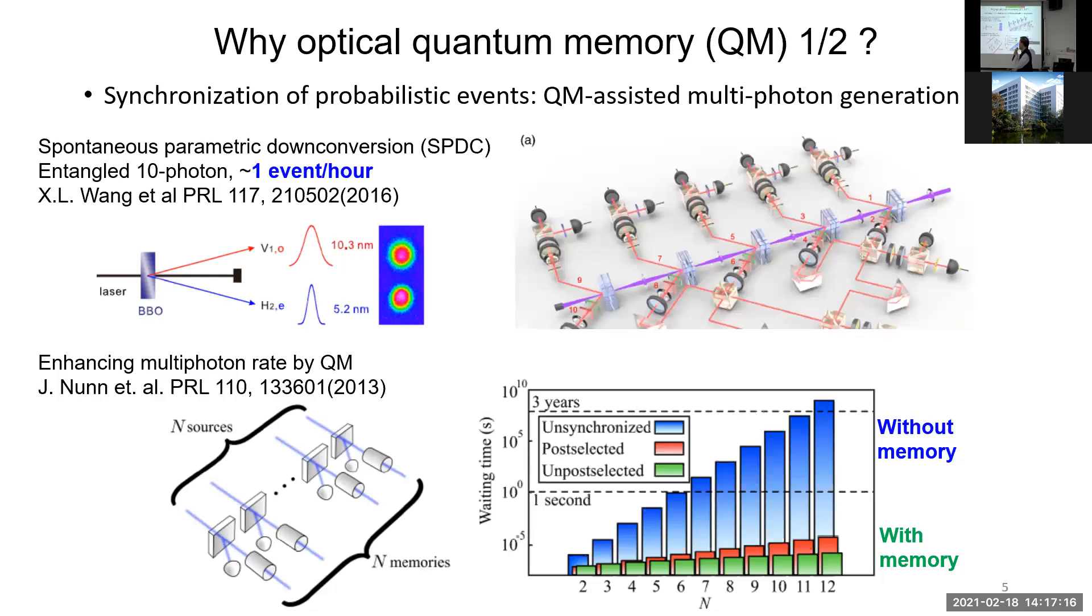What can we use for this quantum memory? Basically you can synchronize probabilistic events. For example, in Professor Pan Jianwei's experiment they can generate maybe 10 or 12 entangled photons using parametric down conversion, but they use a pump laser to pump many crystals. The time all the photons generate simultaneously, its probability is low. If you have quantum memory, you can store it and then retrieve all at once such that you can increase the multi-photon generation rate. This is one application of quantum memory.